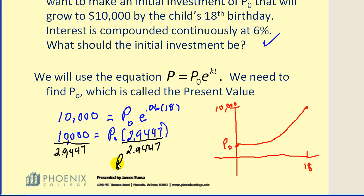So our present value is going to be $3,395.93. This is the amount they should invest today to have $10,000 eighteen years from now.